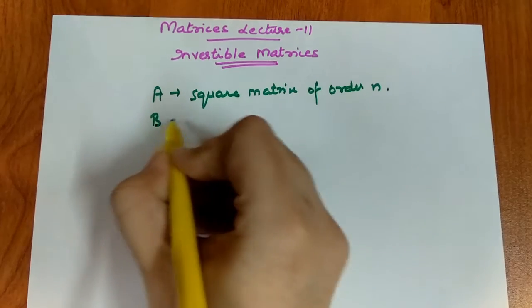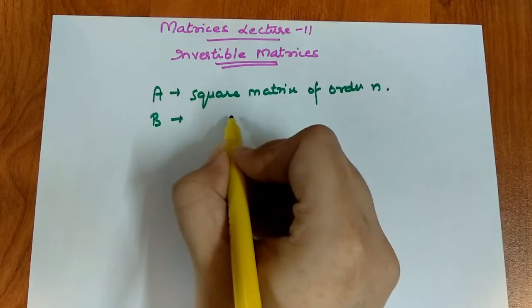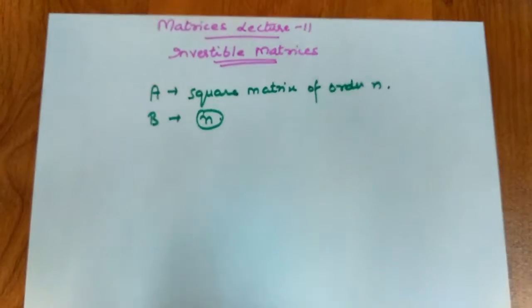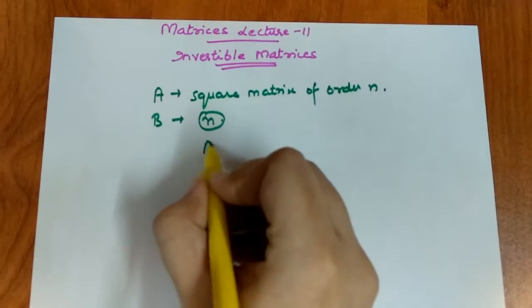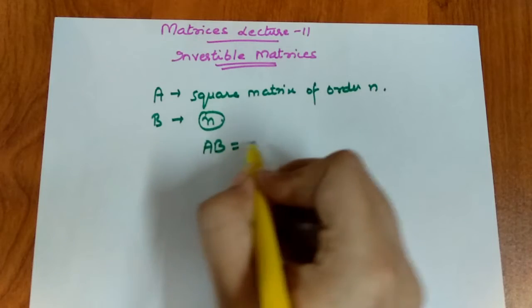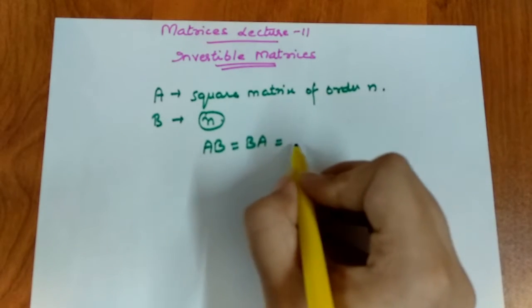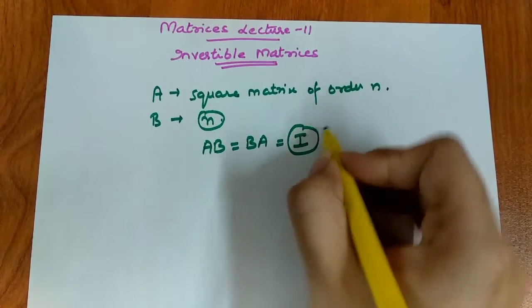There is only one condition: the product of AB and BA is equal to the identity matrix.